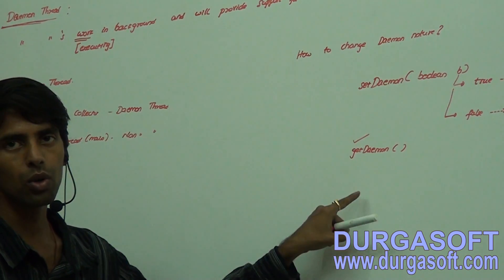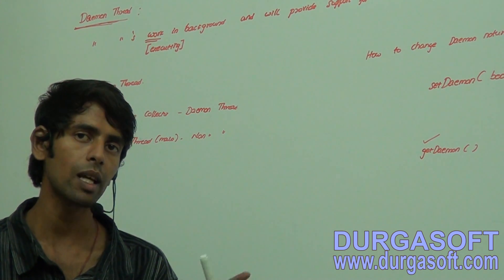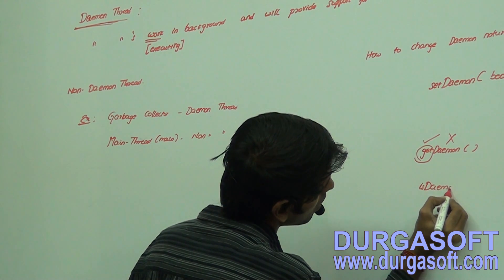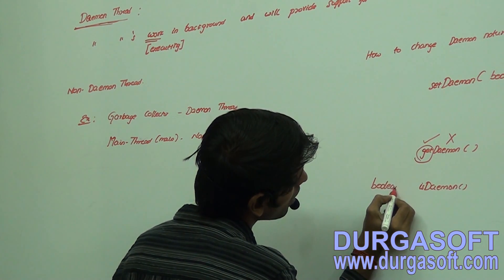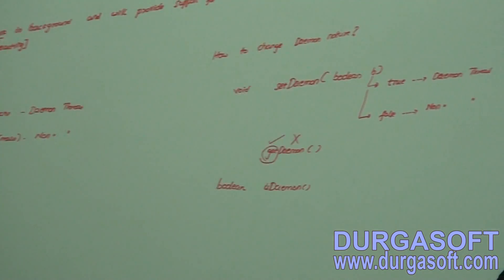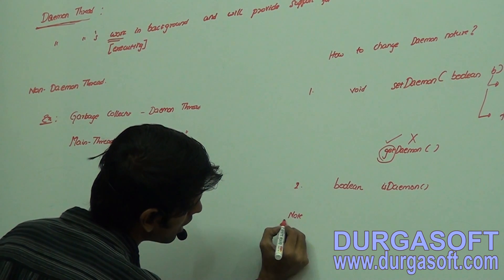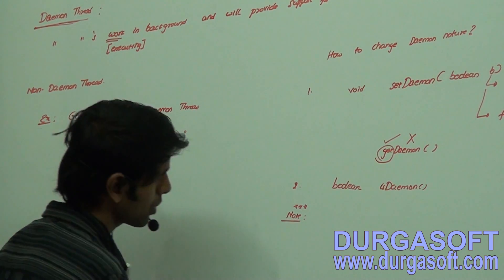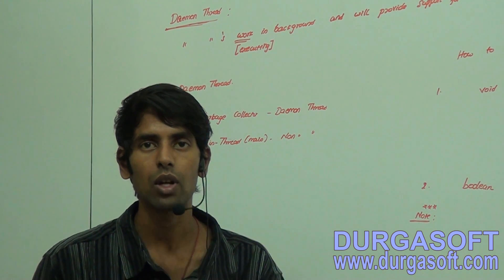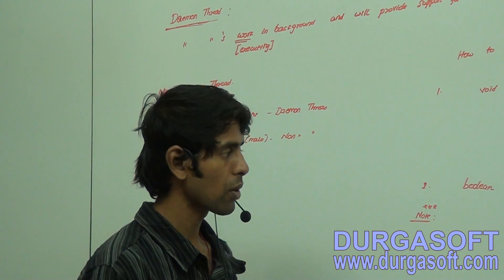Both setDaemon() and isDaemon() are instance methods. An important technical point: you cannot change the daemon nature of a thread if it has already been started. If you try, the JVM will raise an IllegalThreadStateException.